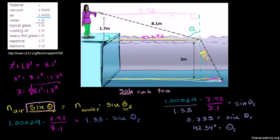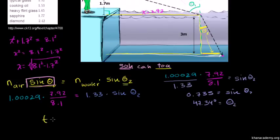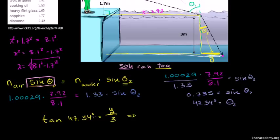Now we use trigonometry to find the horizontal distance y the laser travels through the water. We know θ₂ = 47.34°, the adjacent side is the pool depth of 3 meters, and we want the opposite side y. Using tangent — opposite over adjacent — tan(47.34°) = y/3, so y = 3 × tan(47.34°) = 3.255 meters.